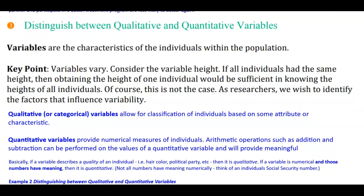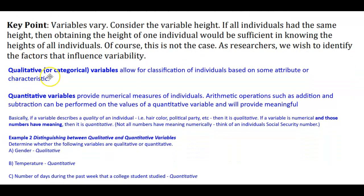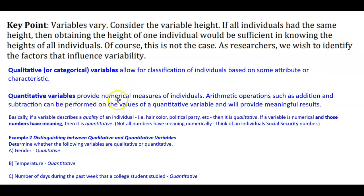Objective three: distinguish between qualitative and quantitative variables. Variables are characteristics of the individuals within the population, and the key point is that variables vary. Consider the variable height — if all individuals had the same height, obtaining one measurement would be sufficient, but of course that is not the case. Qualitative or categorical variables allow for classification of individuals based on some attribute or characteristic. Quantitative variables provide numerical measures of individuals, and arithmetic operations such as addition and subtraction can be performed on their values to provide meaningful results.